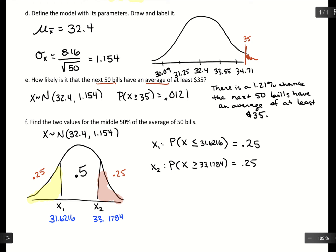So the middle 50% of the average of 50 bills is between $31.62 and $33.18. This is what we can do if we have a distribution that's not normally distributed for our population. The main extra step is just checking that we have a large enough sample size, but then calculations within GeoGebra work exactly the same.